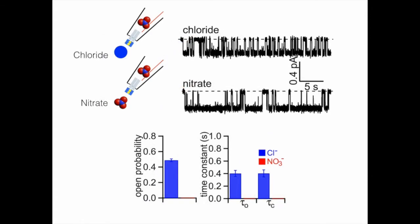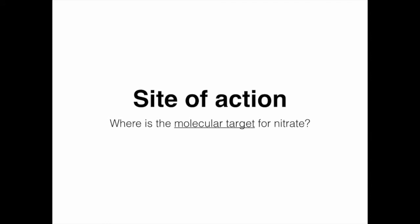To probe the binding site of nitrate, we first conducted an experiment with nitrate in the pipette solution, which is the intracellular side of the channel, and found that nitrate has little effect on gating when intracellular anion is chloride. But after we replaced intracellular anion with nitrate, we could see a clear increase of open probability. Since replacing external chloride with nitrate does not replicate the gating effect of internal nitrate, the binding site of nitrate is likely located on the cytoplasmic side of CFTR.